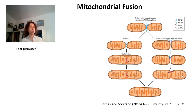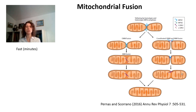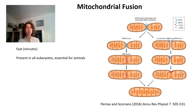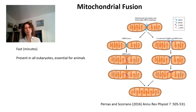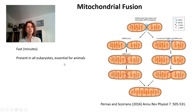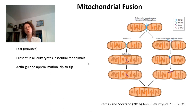How does mitochondrial fusion occur? First, it is a fast process - it occurs in a time frame of minutes and you can see it happening dynamically within cells. Second, it's present in all eukaryotes and the machinery for mitochondrial fusion is conserved through all eukaryotes. Mitochondrial fission is necessary because cells divide, so you have to divide mitochondria, but mitochondrial fusion is also essential for animals. Mitochondria are going to fuse when they approach each other tip to tip, typically, and this approximation is guided by actins, so the cytoskeleton is really important.